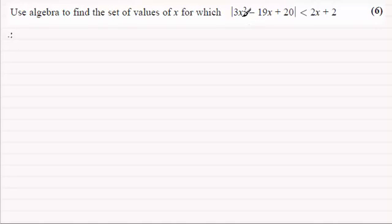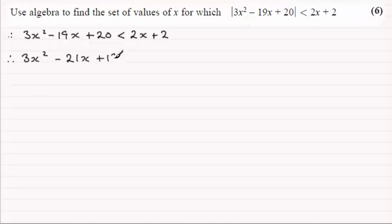So if I just look at the positive value, we've got 3x² - 19x + 20, and that has got to be less than 2x + 2. Now if we rearrange this, just make it a quadratic inequality, then it's going to be 3x² - 21x + 18, and that's less than 0.